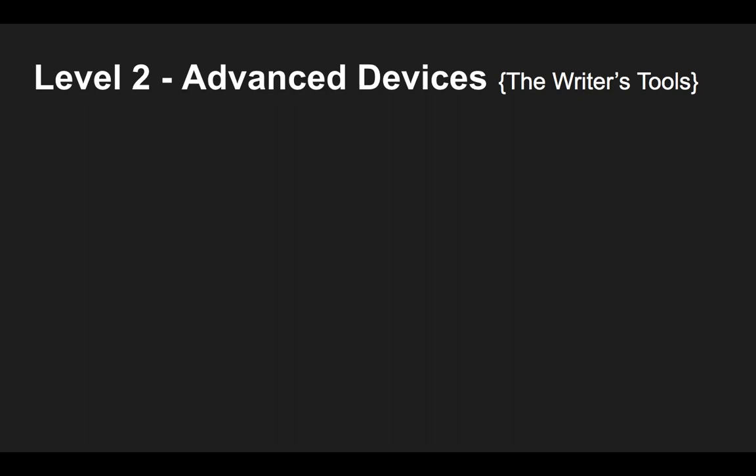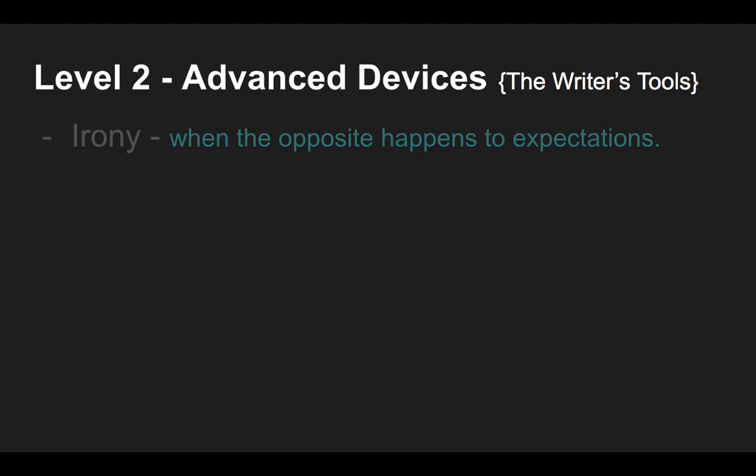Now we're going to talk about Level Two story elements — what I sometimes call the advanced devices, or writer's tools. These are things we really need to keep our eyes out for. They're usually set up in a traditional way, so they're a little more advanced and we have to keep our eyes open.